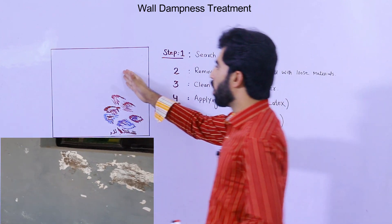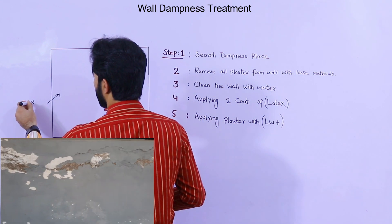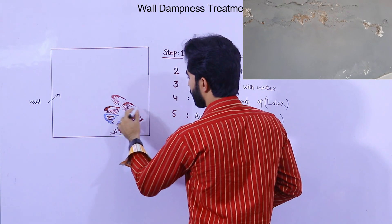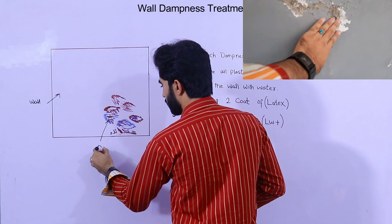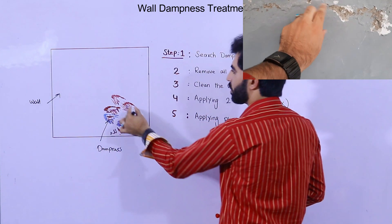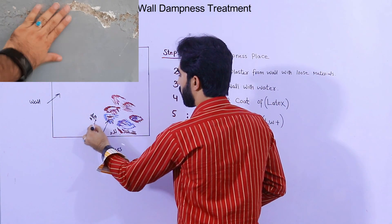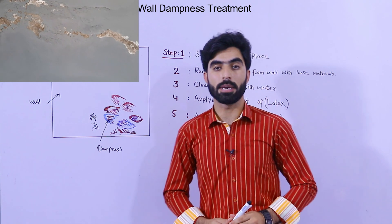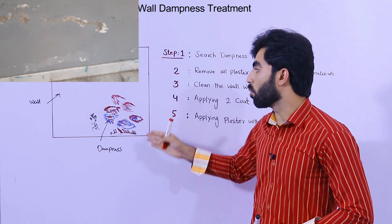As you can see here, this is the wall and this is the dampness. So first of all, you should find the reason for the dampness — from where the dampness started in the wall.